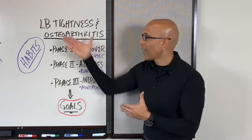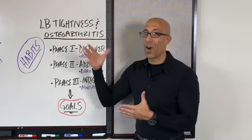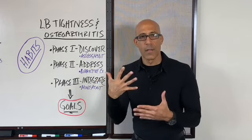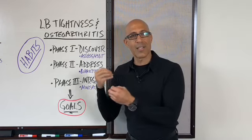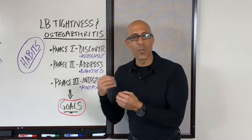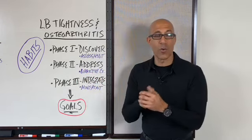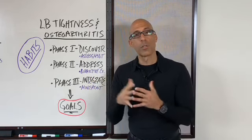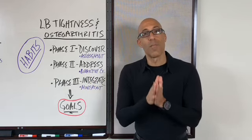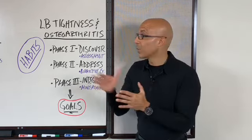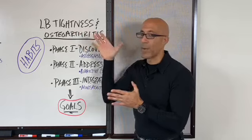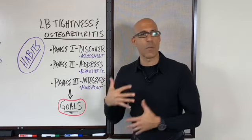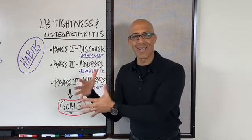Low back tightness is often one of the first signs around the spine that tells us we're using a non-optimal or inefficient strategy. So what's the most important muscle when it comes to low back tightness? Oftentimes we hear: oh, it's the psoas. Everybody's got psoas tightness.